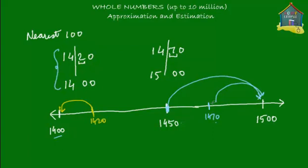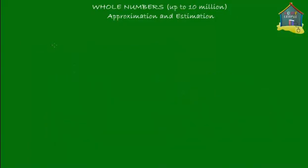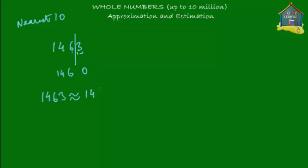For rounding to the nearest ten, the procedure is the same. Take 1,463: you only care up to the tens place — 1, 4, 6 — and drop the ones place, replacing it with zero. Check the ones digit: 3 is less than five, so round down. 1,463 rounded to the nearest ten is approximately 1,460. For 1,468, the ones digit is 8, which is greater than five, so round up: 1,468 is approximately equal to 1,470.